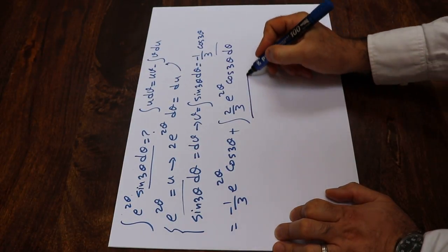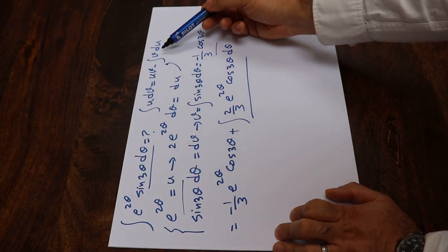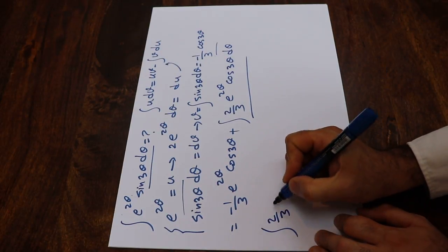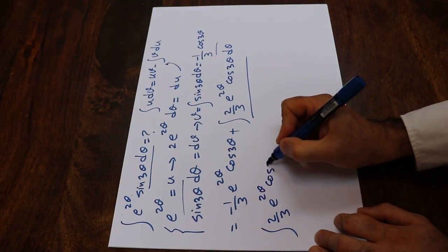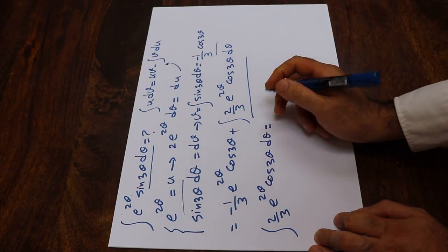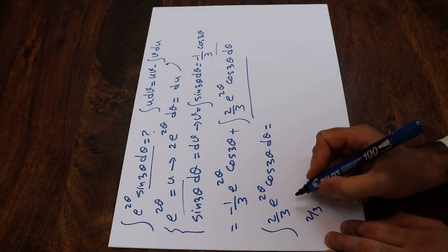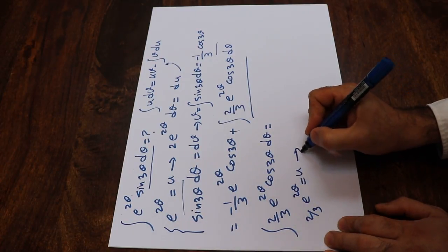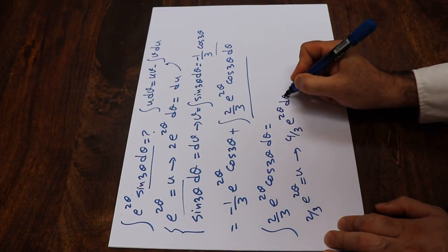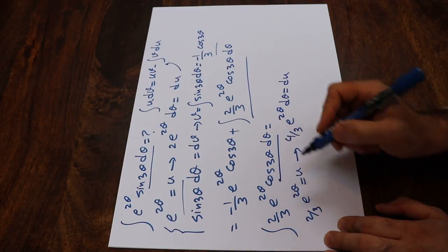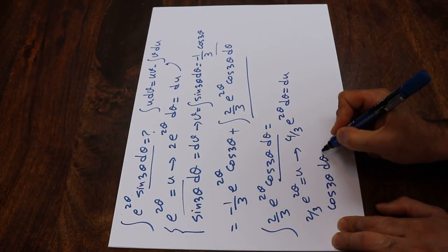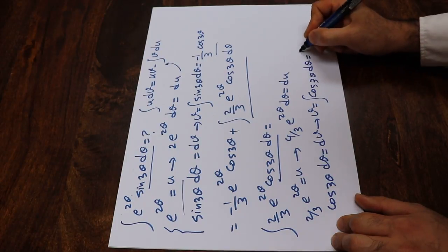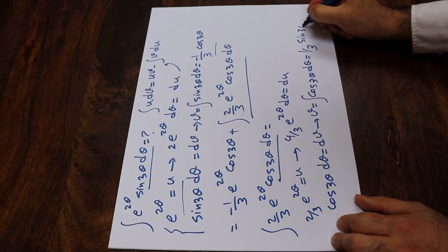Now we need to calculate this remaining integral by applying integration by parts one more time. We define 2/3 · e^(2θ) as U, so its derivative gives 4/3 · e^(2θ) dθ equal to dU. We define cosine 3θ dθ as dV, so V equals the integral of cosine 3θ dθ, which equals 1/3 sine 3θ.